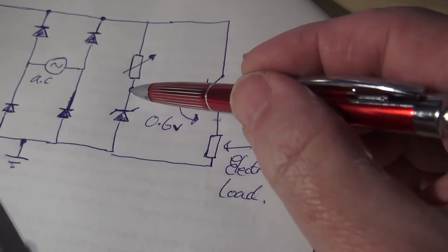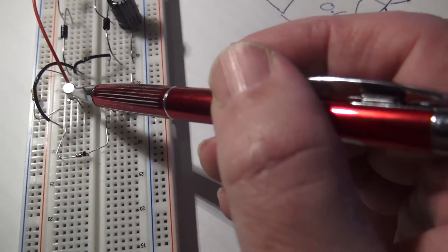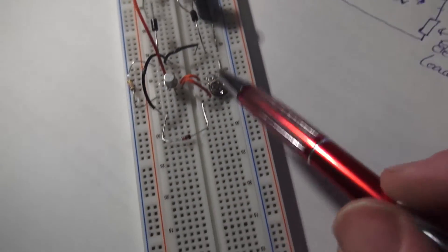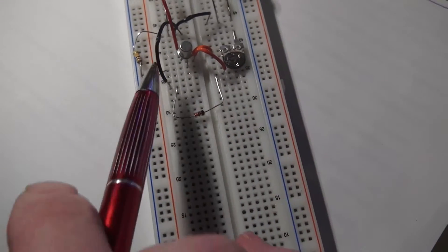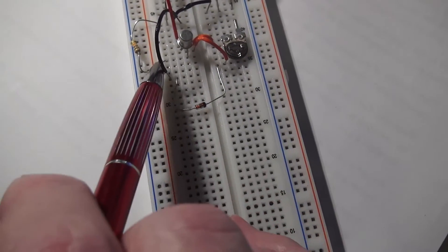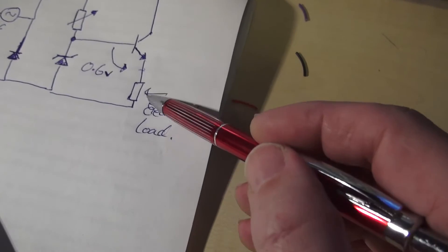And to the cathode of the Zener regulator. And here's our transistor here in the circuit. And then we've got our electrical load here that goes down to ground. And on the schematic, that's the electrical load there.